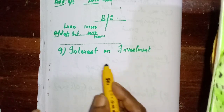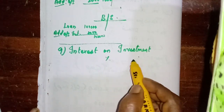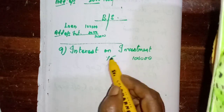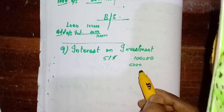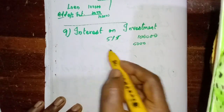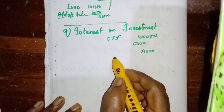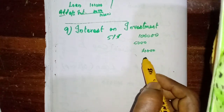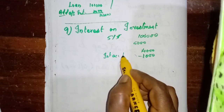Here also we need to calculate. If we invest some amount, the percentage will be given. For example, if the investment is 1,00,000 and the percentage is 5%, then interest we are supposed to receive is 5,000. But in the trial balance on the credit side, interest on investment received may be given as 4,000. So how much is accrued — interest accrued but not yet received — is 1,000.